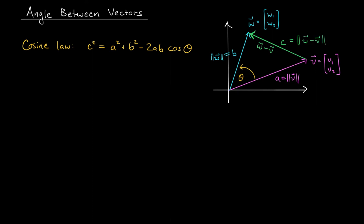Now that's pretty cool. Because it means that we can rewrite our cosine law as follows. C squared, that's the norm of W minus V squared, is equal to norm of V squared plus norm of W squared minus 2 norm of V norm of W cos theta. We've rephrased the cosine law in terms of vector norms.